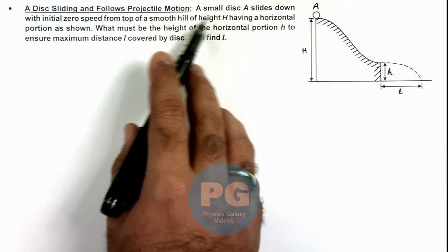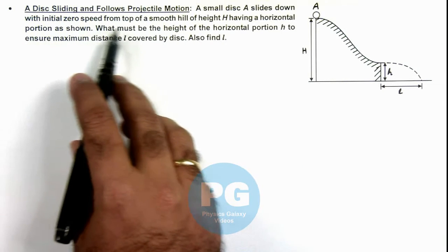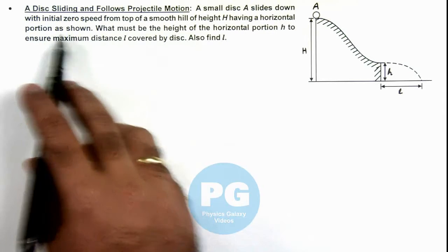Here we are given that a small disc A slides down with zero initial speed from top of a smooth hill of height H having a horizontal portion as shown.